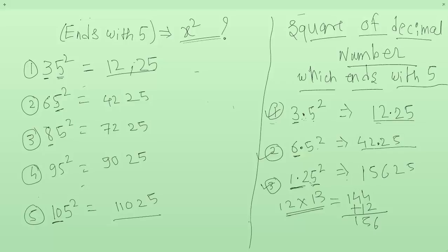Now there is a decimal point before 2 digits. So in our answer, the decimal point will be before 4 digits. Therefore our answer will be 1.5625.